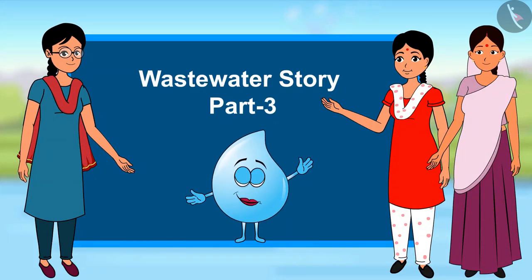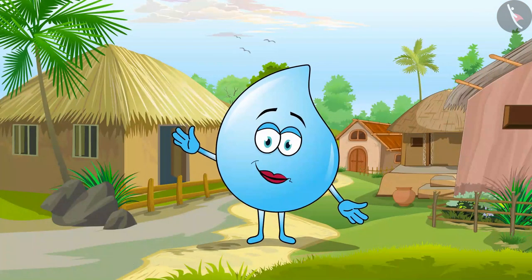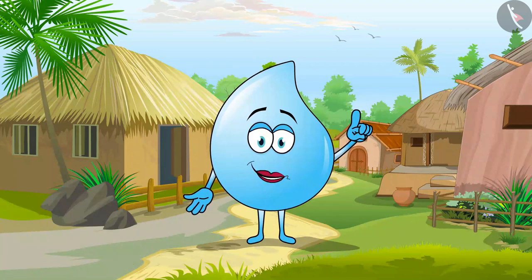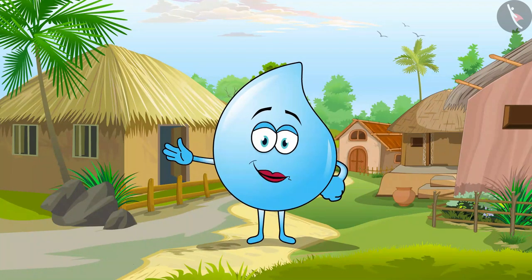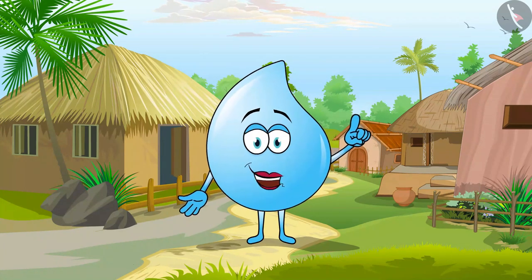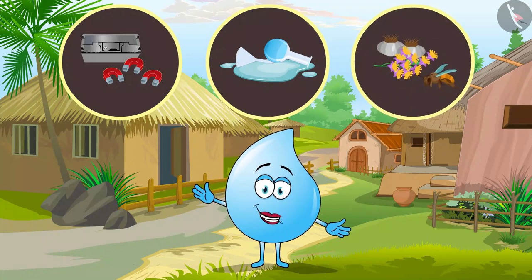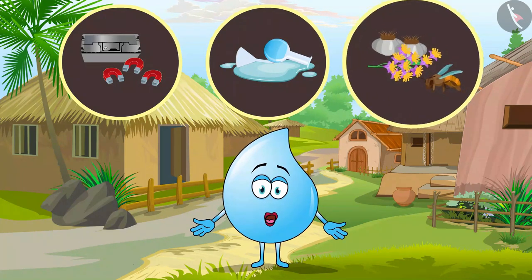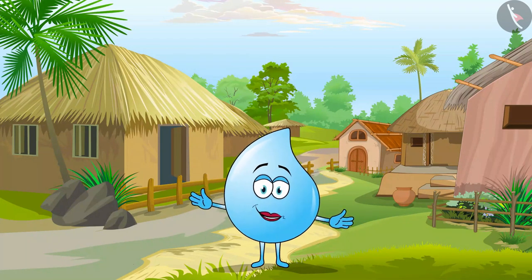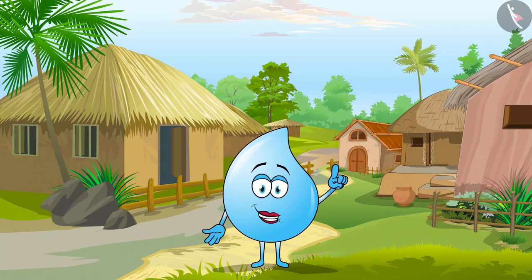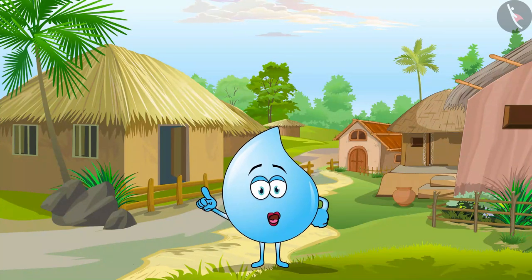Wastewater Story Part 3. Hello children, you learnt about wastewater treatment in the previous video. Wastewater has to go through 4 to 5 stages to be treated. This treatment involves physical, chemical and biological processes. We all have a responsibility to have good housekeeping practices so that we can reduce or completely remove waste materials and pollutants from the water.